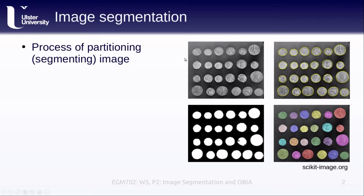This process of pulling out or identifying each of these coins is known as segmenting the image. We can use this processing to create either a mask, where we have identified the difference between coin and the background, or we can also use this to create a labeled image, such as is shown here, where each of the individual coins has been identified and given a label, which we can use for further processing.